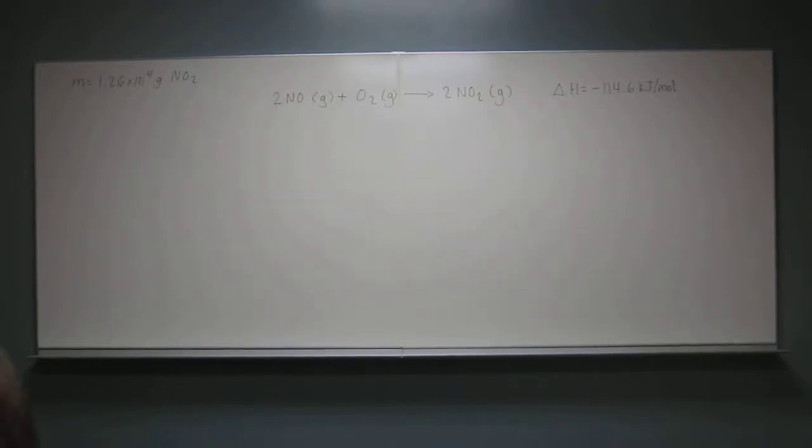OK, so let's try this problem. It says, determine the amount of heat in kilojoules given off when 1.26 times 10 to the fourth grams of nitrogen dioxide are produced according to the reaction equation.